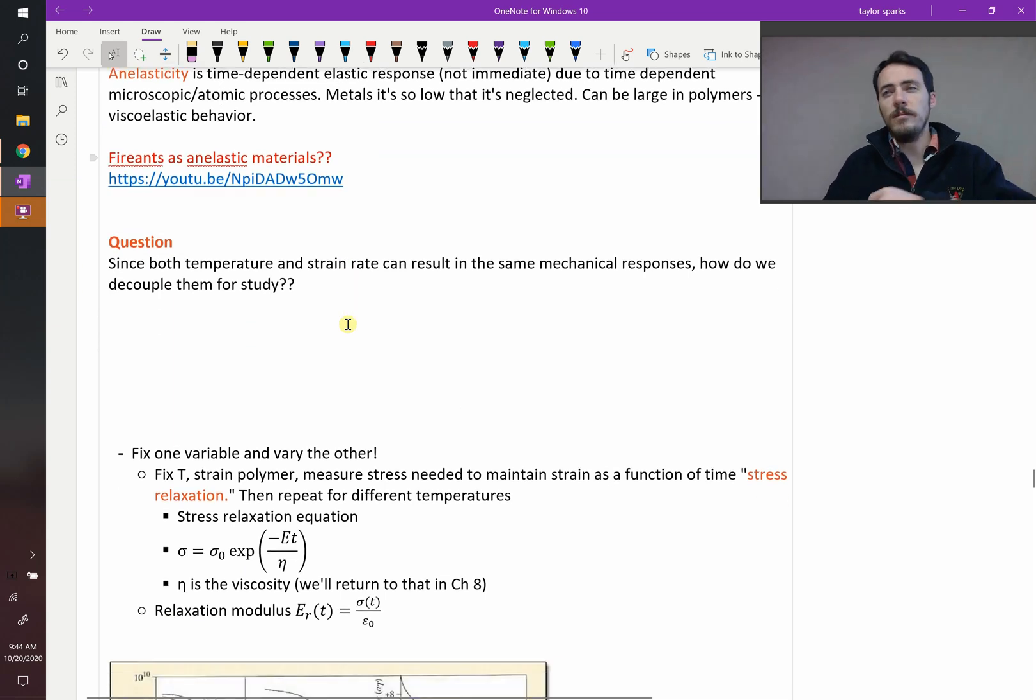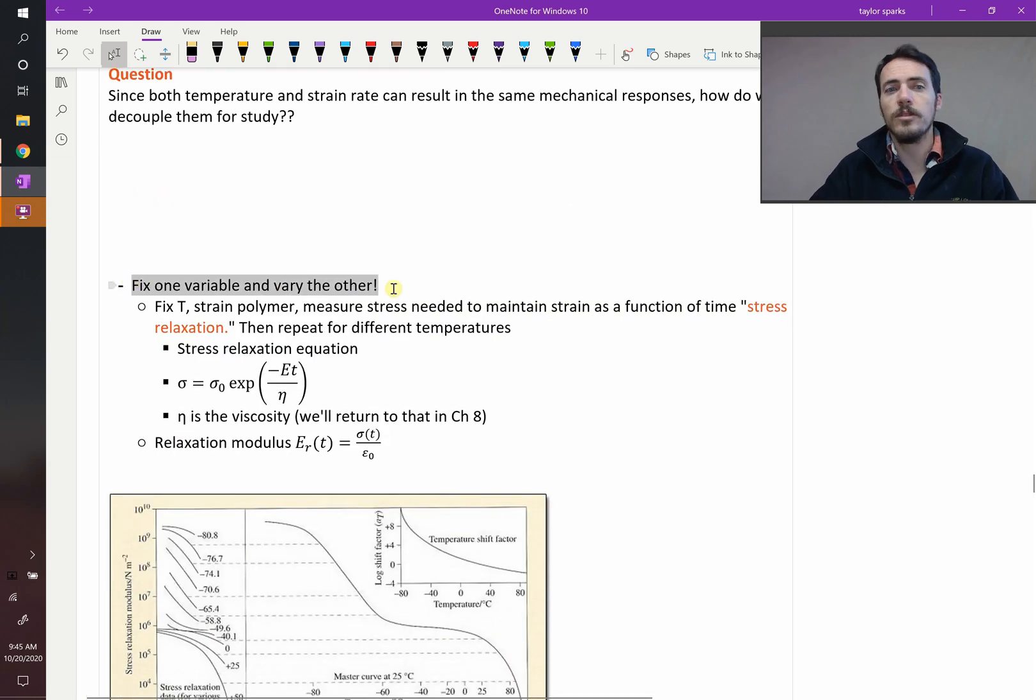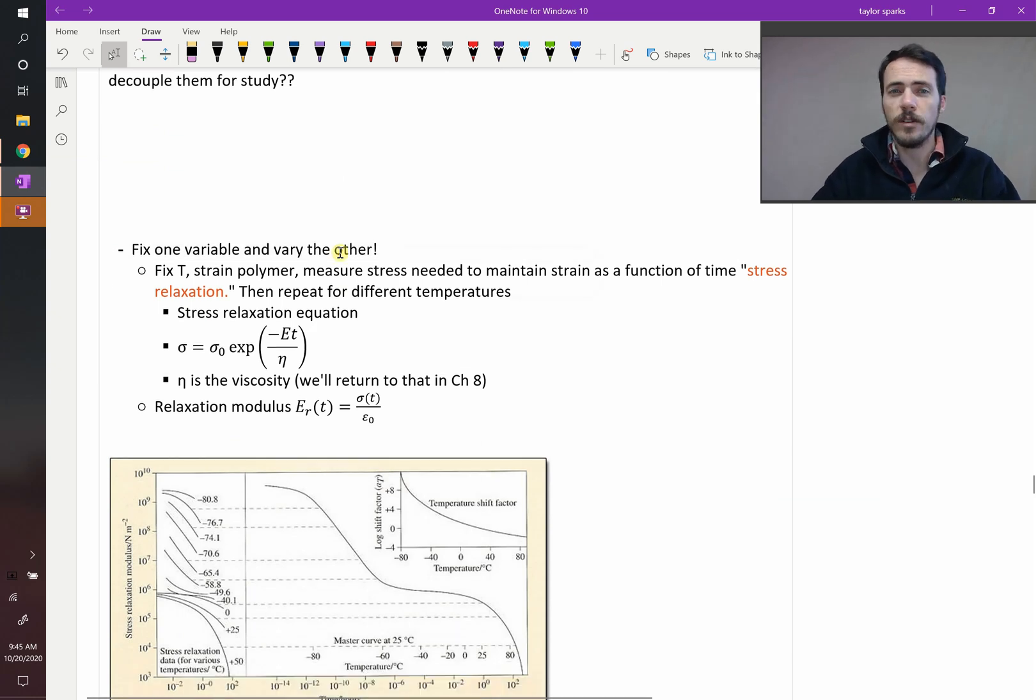Well, how about this question? We know that both temperature and strain rate can influence mechanical response in the same ways. Increasing strain rate, decreasing temperature, both makes it look more like a brittle material. So if both of those things influence mechanical properties, how do we decouple them? Well, the trick here is that you're gonna fix one of the variables and then vary the other and then do that for the other variable. So you fix one, vary the other.